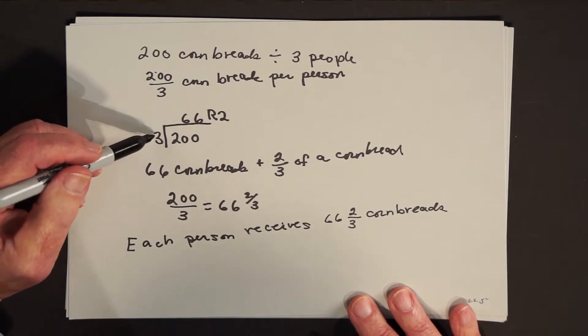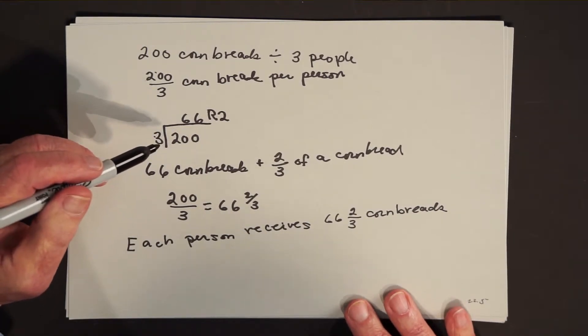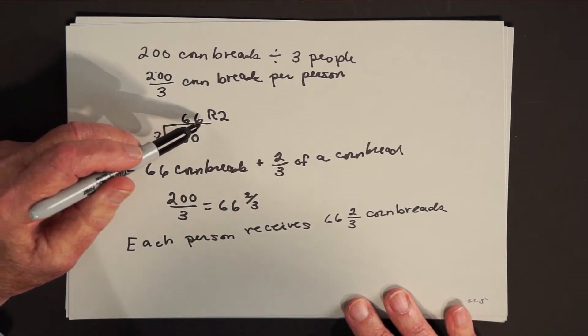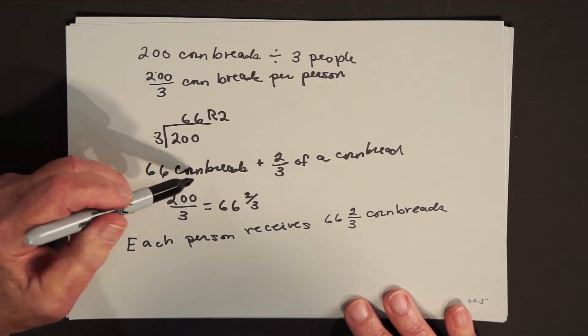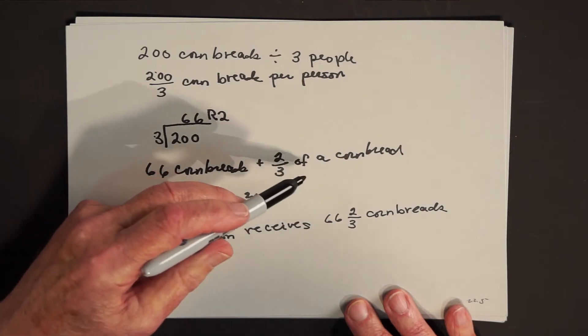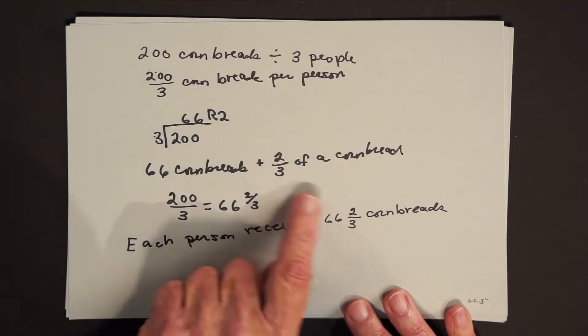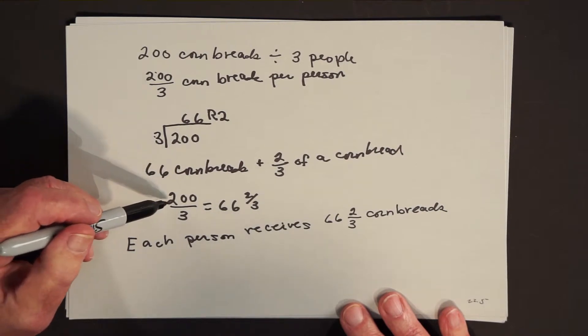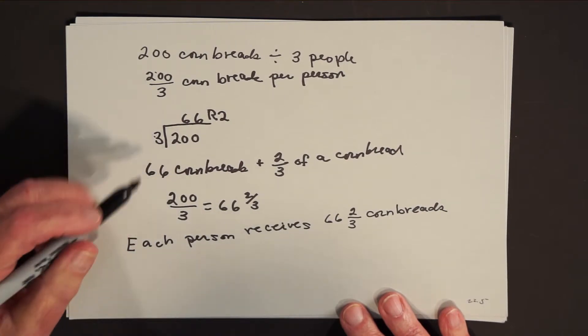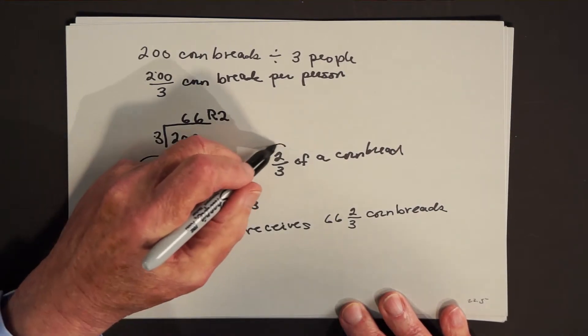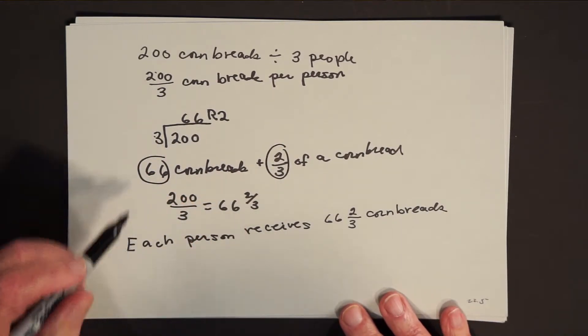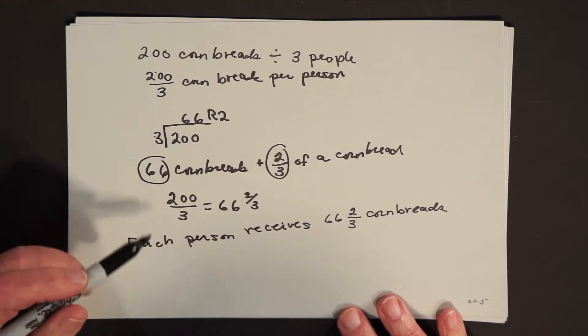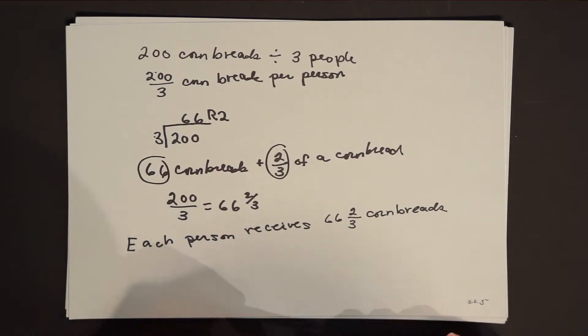And what we would do is divide the 3 into the 200, getting 66 with a remainder of 2, and we would say the 200 pieces make up 66 cornbreads plus 2 thirds of another cornbread, 2 of the 3 pieces that you would need. And so 200 divided by 3 is 66 plus 2 thirds. And another way of saying that is then, if you divide 200 cornbreads equally with 3 people, each person receives 66 and 2 thirds cornbreads.